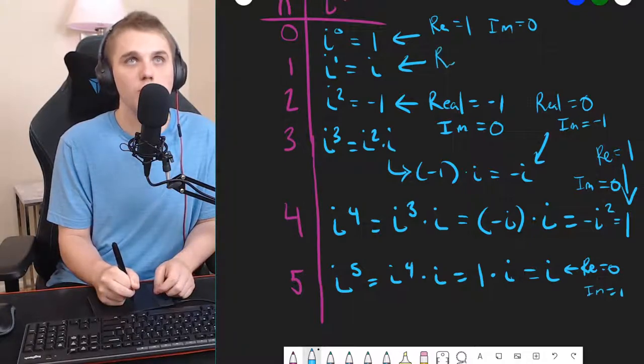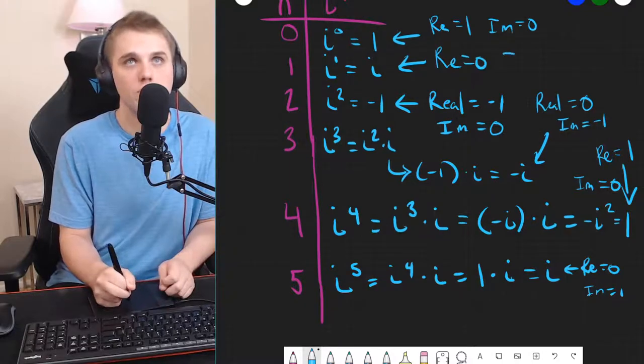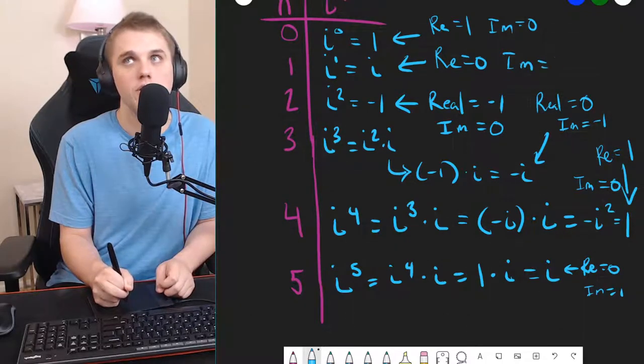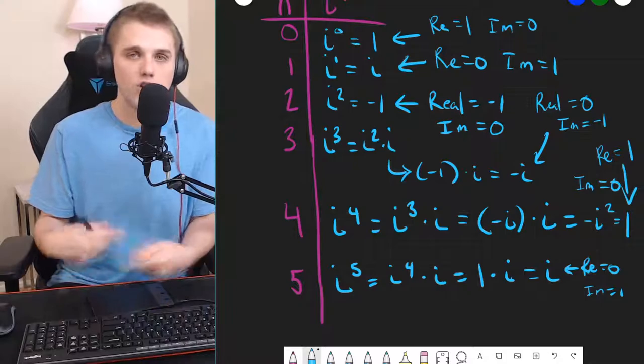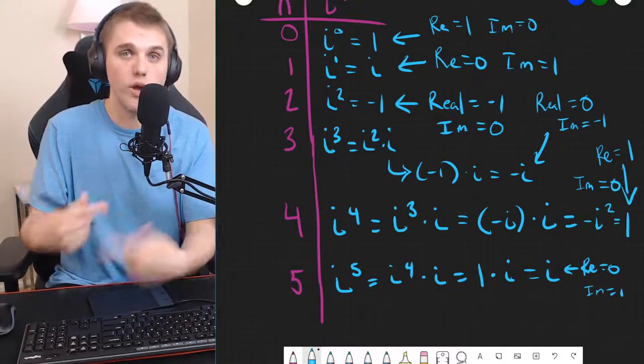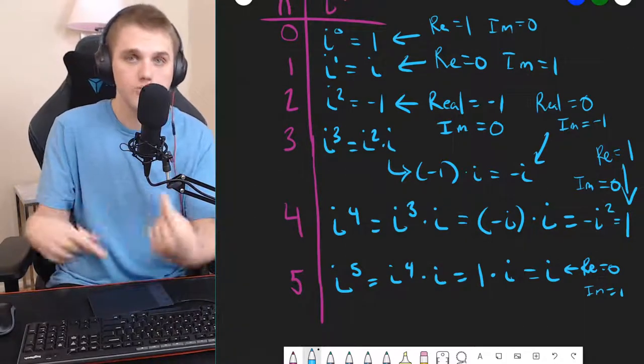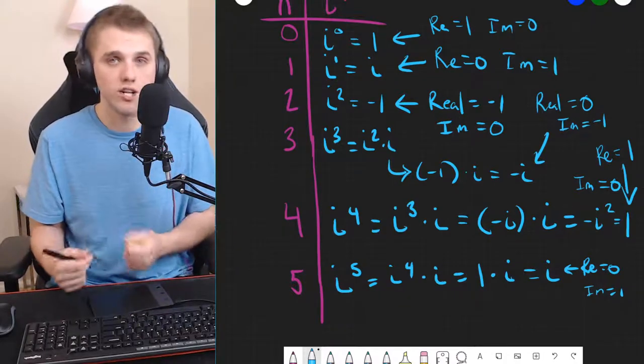Just like above, we had a real part here was 0, and the imaginary part was 1. And so, you might notice that we're going into a cycle. We're just going back and forth here. We're alternating.